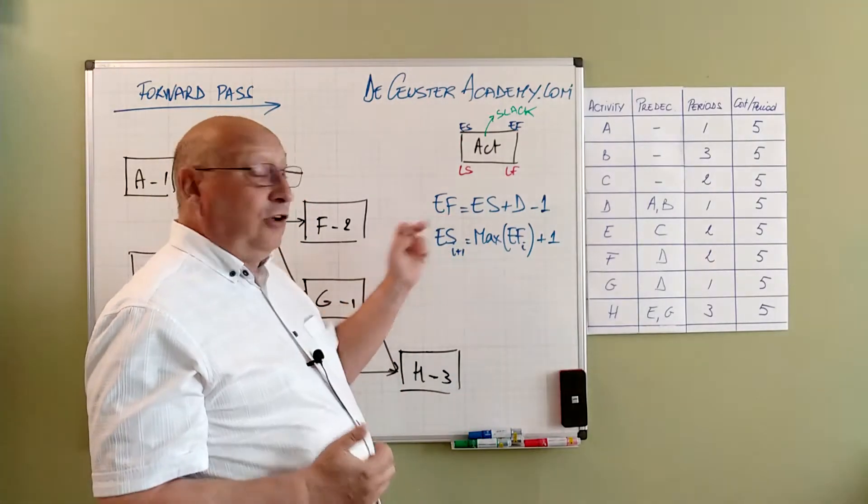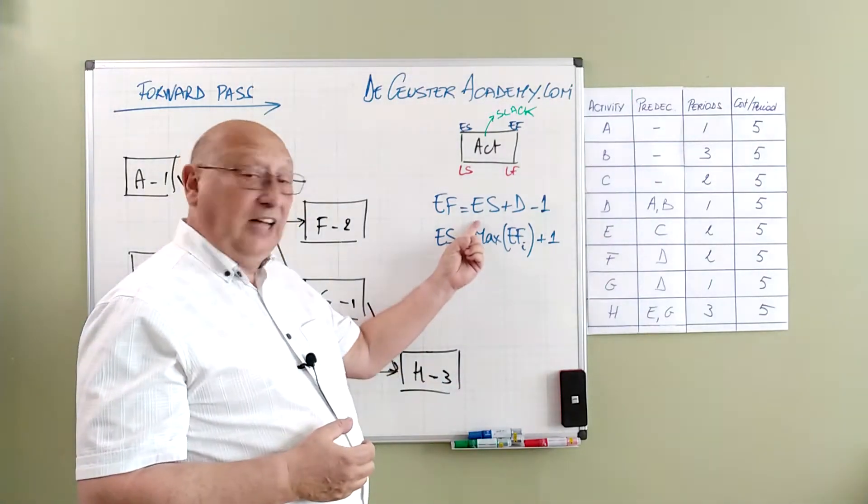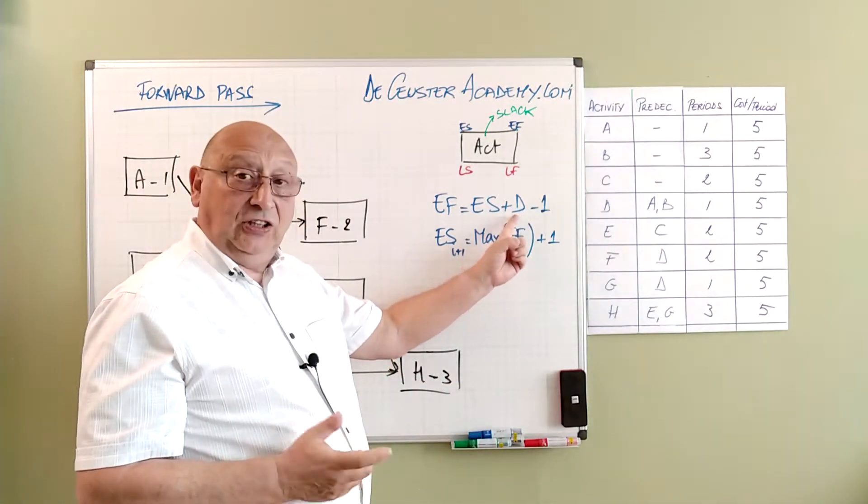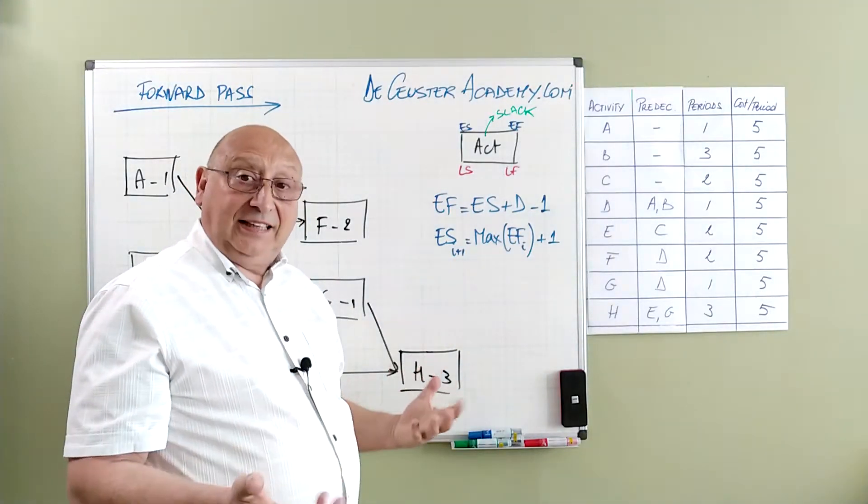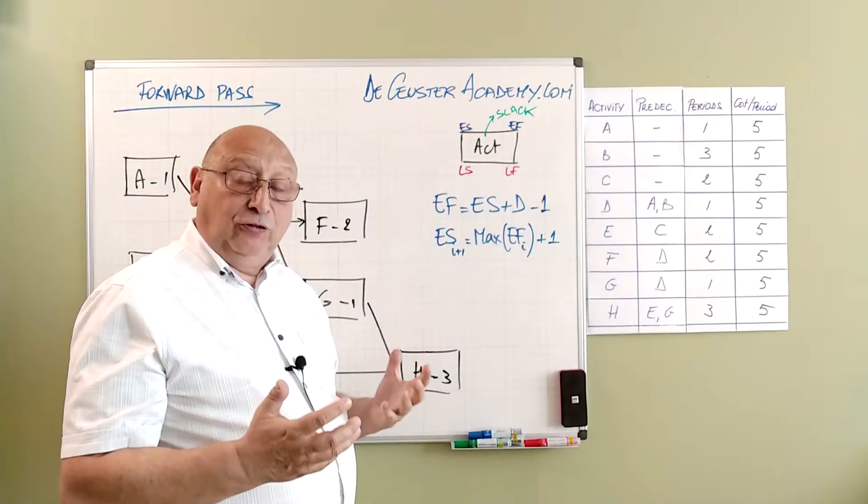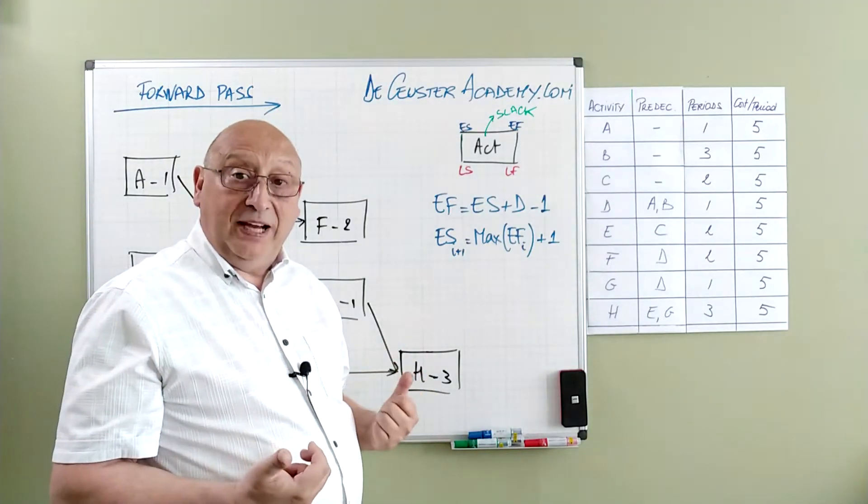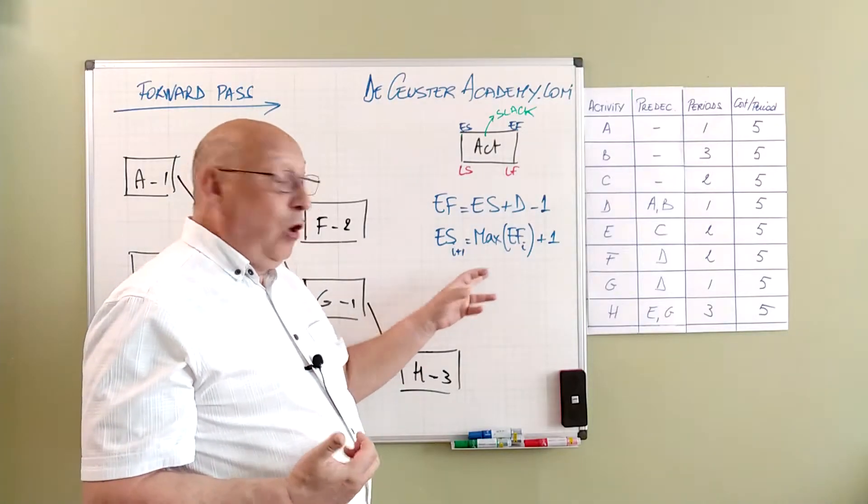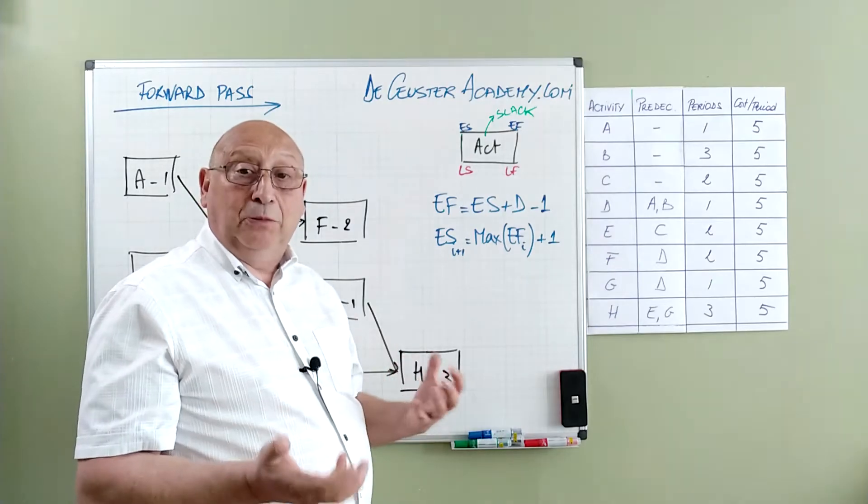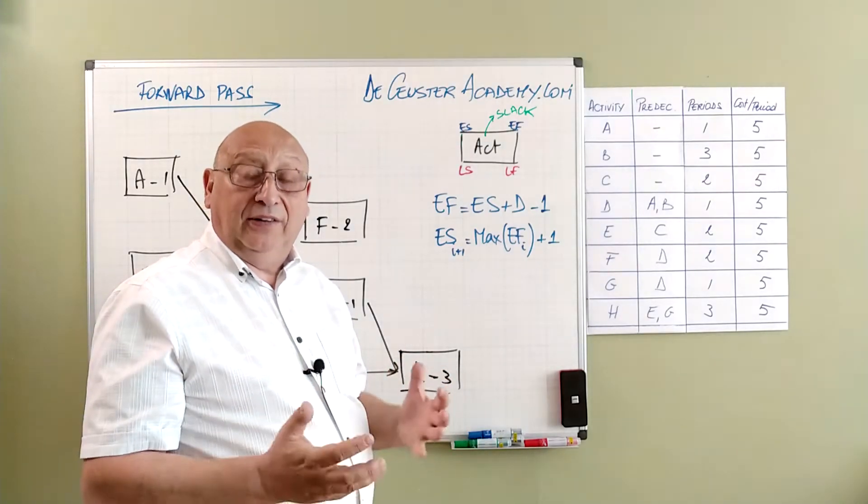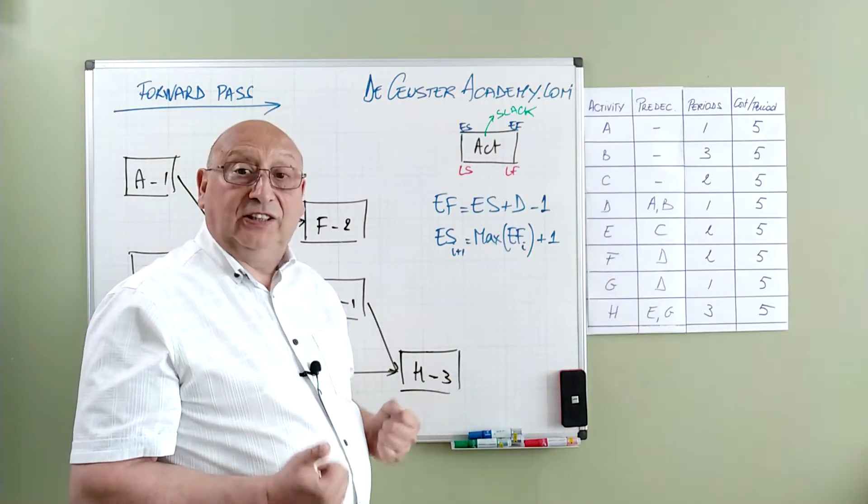To calculate the early finish of an activity, we start from the early start, add the duration and subtract one. For the next activity we have to find the early start based on the predecessor information. So we look at all the early finish of the predecessors and we take the maximum value and add one. That will be the early start for the successor activity.